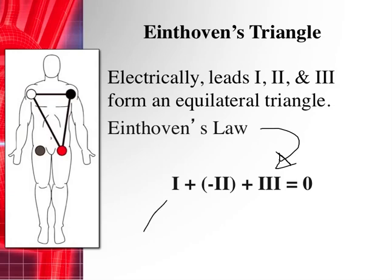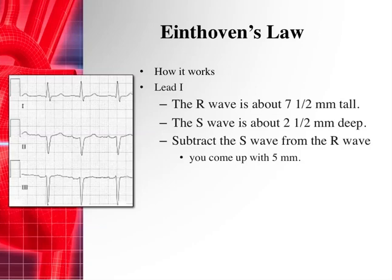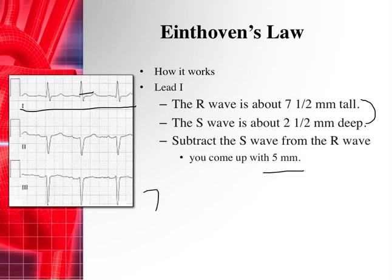Eindhoven's law states: if you take lead one, add that to negative lead two — so whatever lead two is, you change its symbol — and then add lead three, that will always equal zero. Looking at this EKG example: lead one has an R wave about seven and a half millimeters tall and an S wave about two and a half millimeters deep, so seven and a half minus two and a half equals about five millimeters.